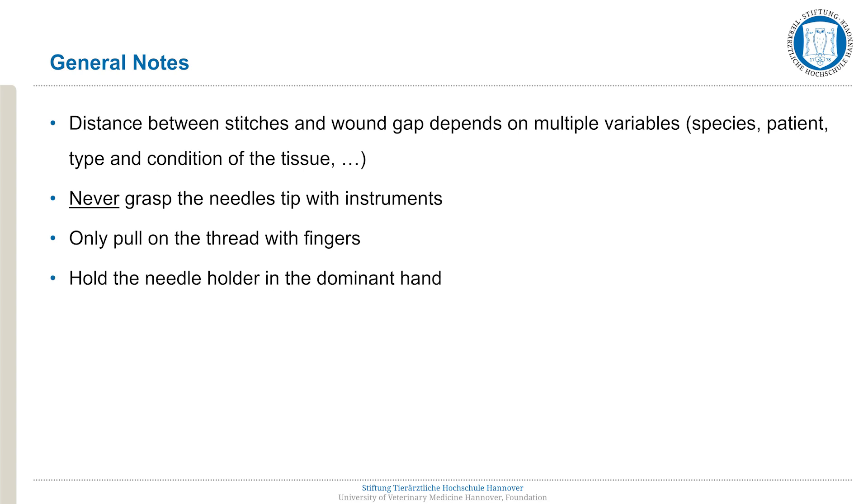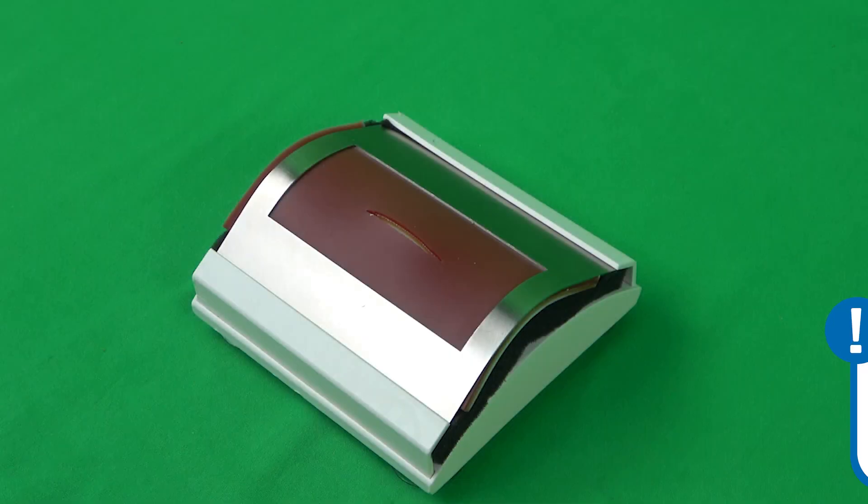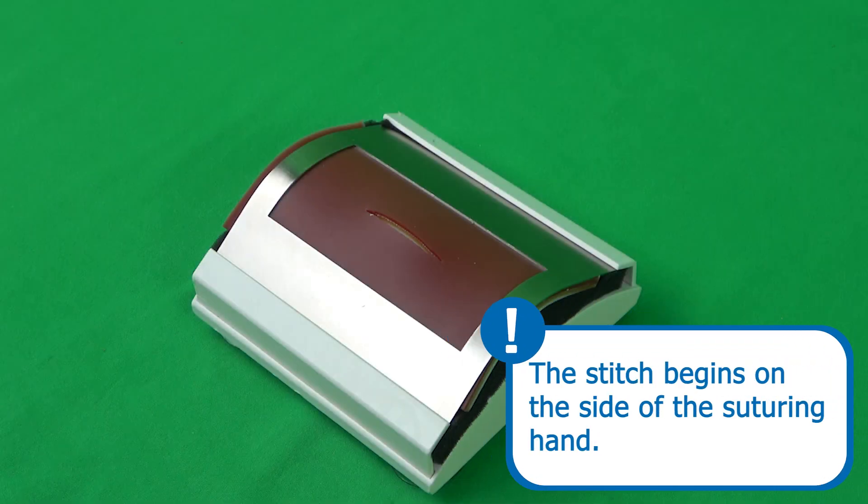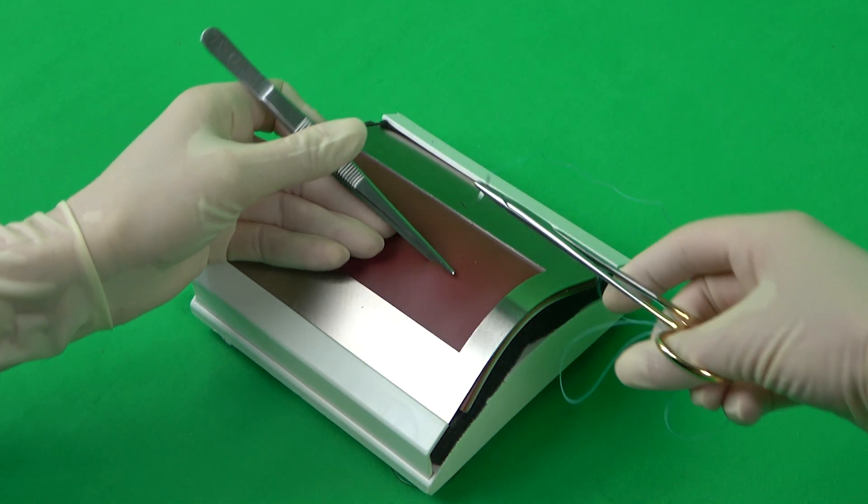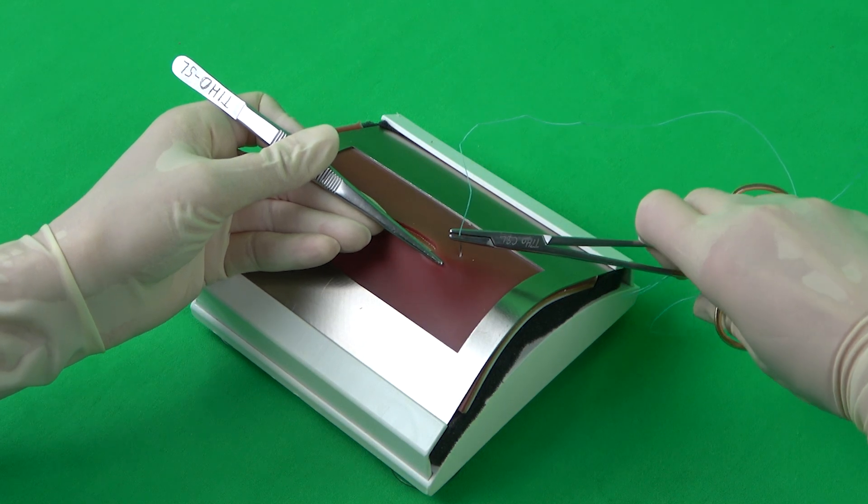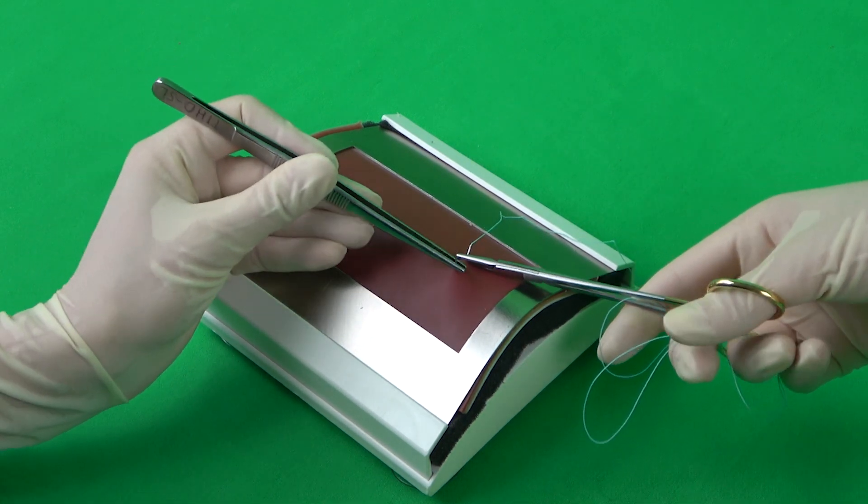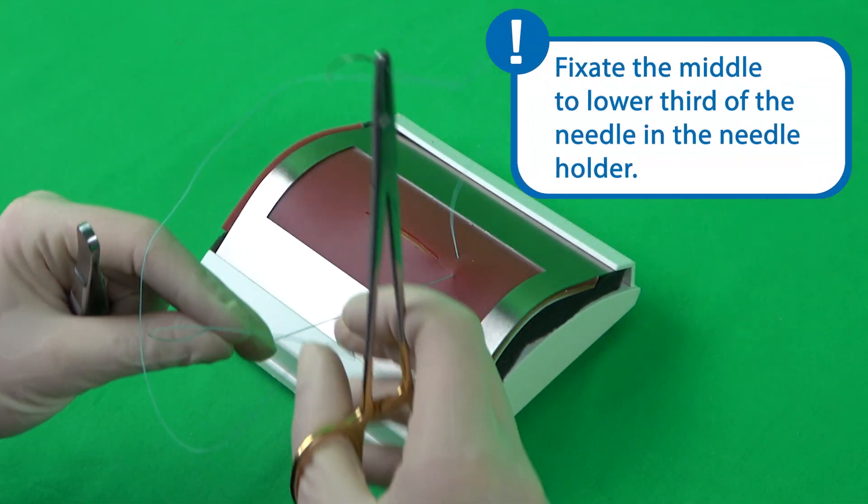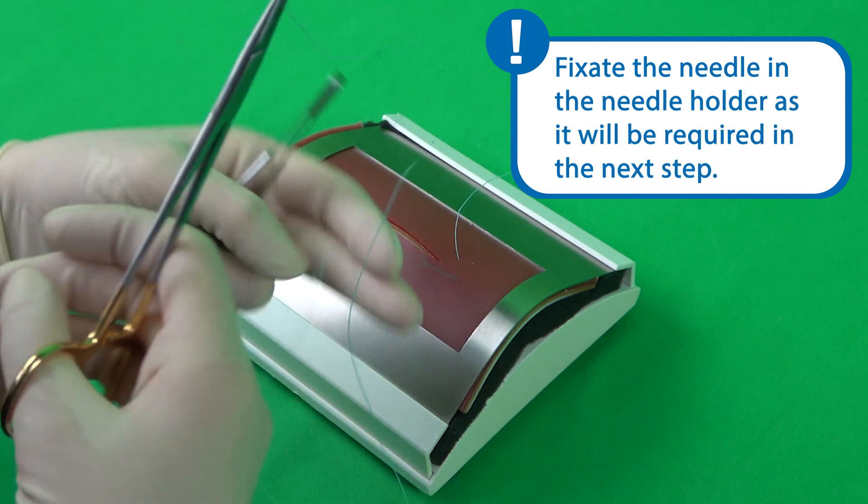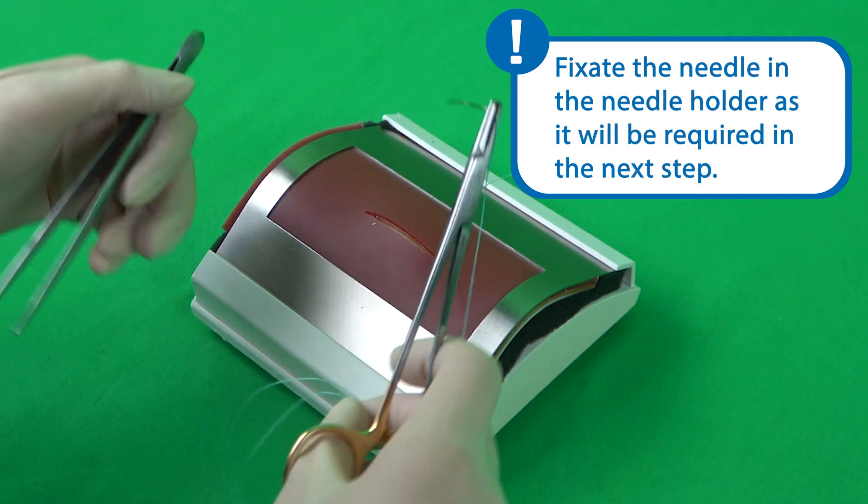The needle holder with fixated needle is held in the dominant hand, with the remaining thread collected in the palm. A right-handed suture will be demonstrated here, beginning on the right side of the wound. In the first step, a V-shaped perforation is created into intact tissue outside of the wound gap. The points of both V's point away from the wound itself. For this, the tissue at the wound's edge can be lifted with forceps, and the needle is driven from outwards to the centre through the serosa and muscle layers. The needle is grasped with forceps and can be placed into the middle to lower third of the needle holder.